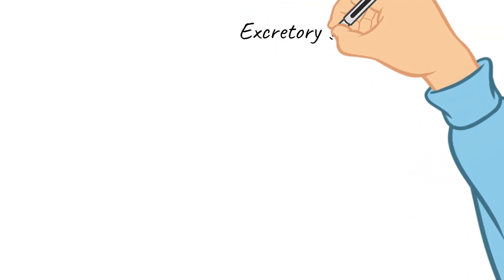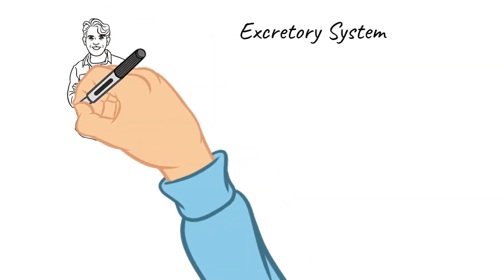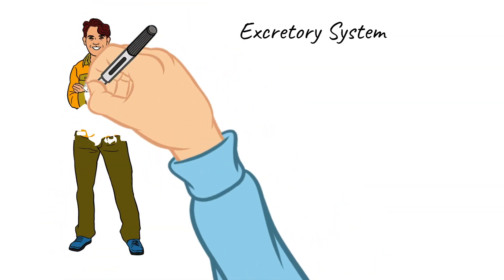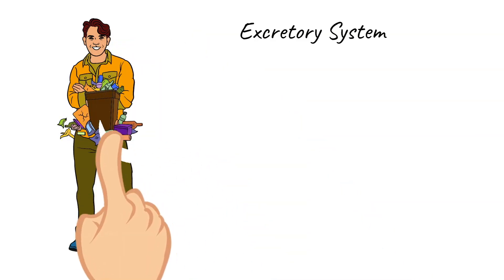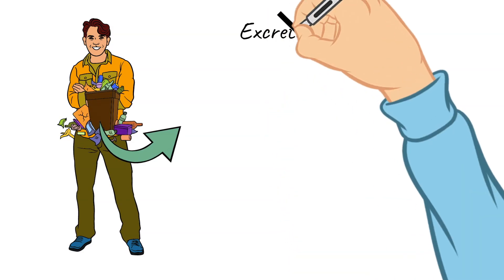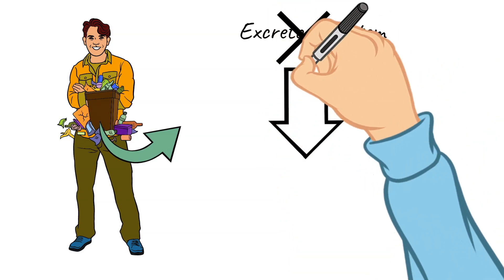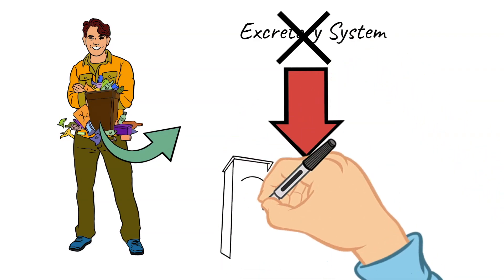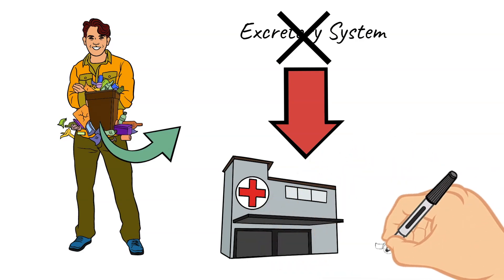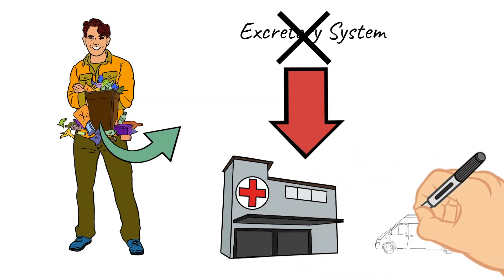Without further ado, let's start doodling. The main purpose of the excretory system is to remove waste that the body doesn't need to use. This is an important system, and when it is not functioning properly, bad things can happen within your body. The build up of waste in your body can wreak havoc on it and cause multiple health issues and concerns.